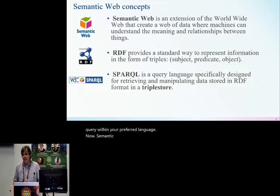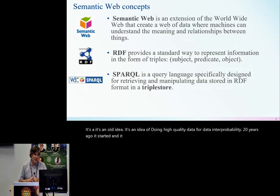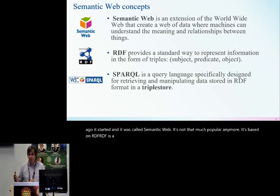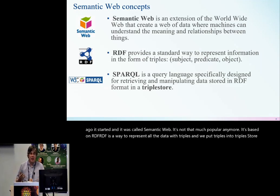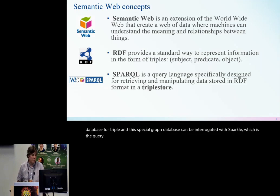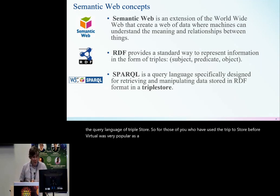Semantic Web is an idea of doing high-quality data for data interoperability. It started 20 years ago and was called the Semantic Web — it's not that popular anymore. It's based on RDF, which is a way to represent all data with triples. We put triples into a triplestore — a graph database — and this special graph database can be queried with SPARQL, which is the query language of the triplestore. Virtuoso was very popular as a database for Semantic Web applications.